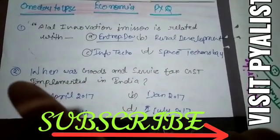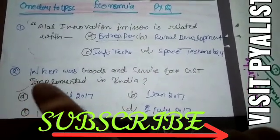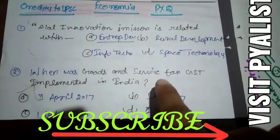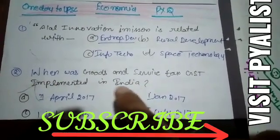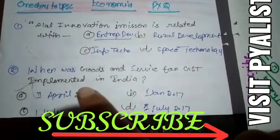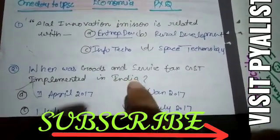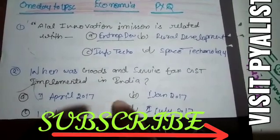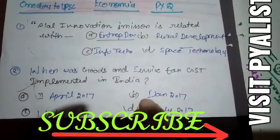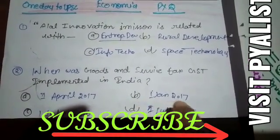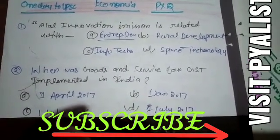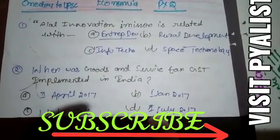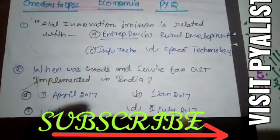Question 2: When was Goods and Service Tax (GST) implemented in India? Option A 1st April 2017, Option B 1st January 2017, Option C 1st July 2016, Option D 1st July 2017.